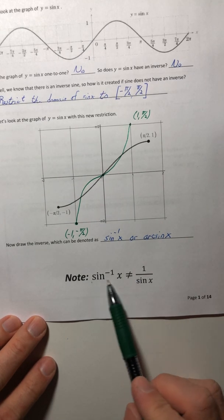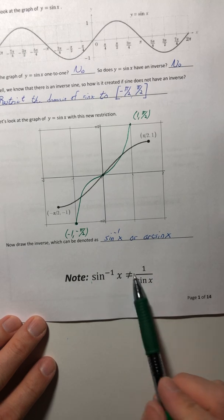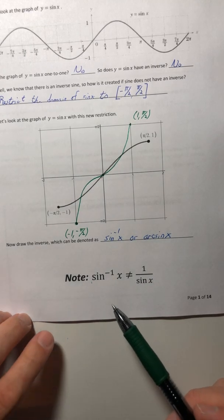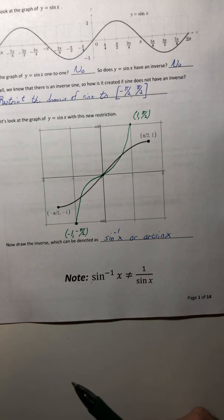So inverse sine of x is not the same thing as one over sine of x. That little negative one does not mean, hey, take the reciprocal. It's the inverse. It's the special inverse notation.